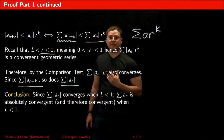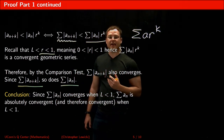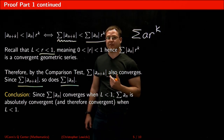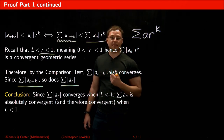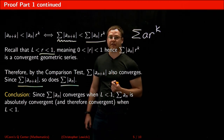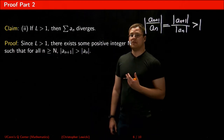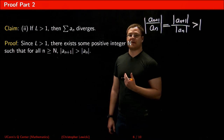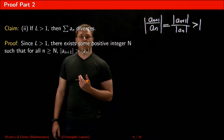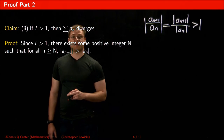In conclusion, if the limit as n goes to infinity of the absolute value of a(n+1) divided by a(n) is less than 1, then by the ratio test the series is absolutely convergent and therefore convergent. Now let's evaluate the claim that if L is greater than 1, then the series diverges.